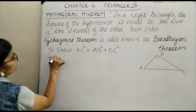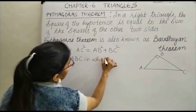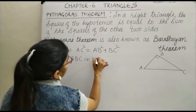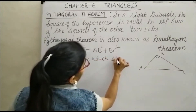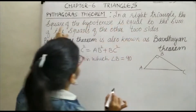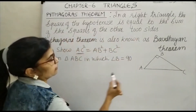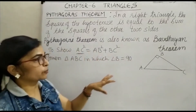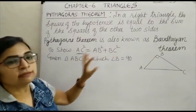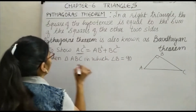What is given here? Triangle ABC in which angle B is equal to 90 degrees. So once again, in a right triangle, the square of the hypotenuse is equal to the sum of the squares of the other two sides. If AC is your hypotenuse, the other two sides are AB and BC. So we have to show that AC square is equal to AB square plus BC square, given triangle ABC in which angle B is equal to 90 degrees.